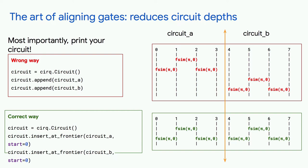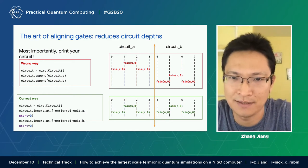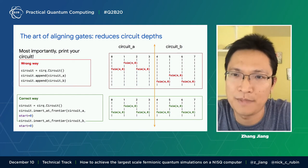So for this example, we have a sub-circuit A and a sub-circuit B. There's a wrong way to align them — which is described first when you create the circuit and then append circuit A and circuit B to the circuit you created. The correct way is to use the function insert at frontier, so that both circuit A and circuit B can start at the beginning. That shortens the circuit depth and reduces the execution time on the device, which means higher fidelity.